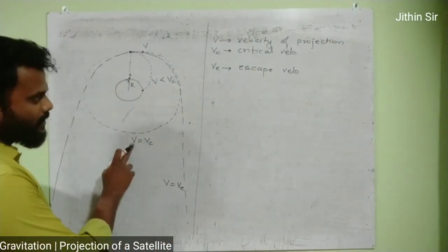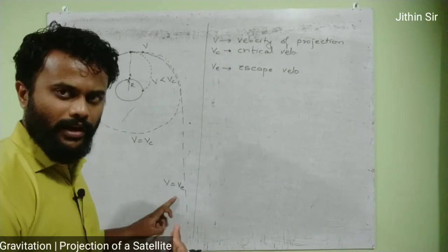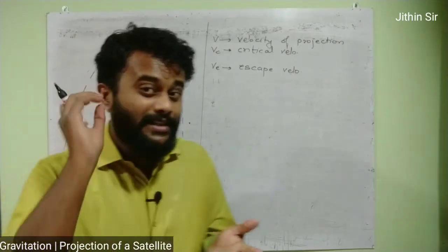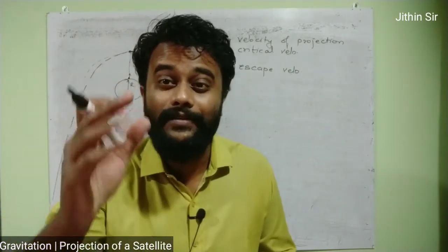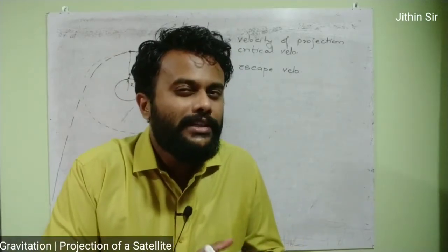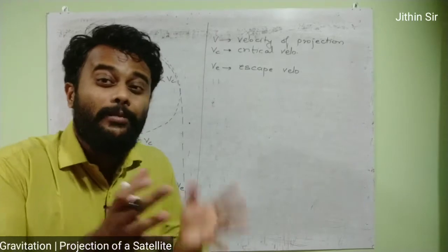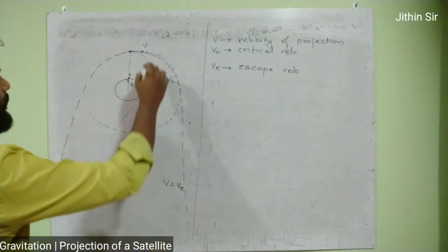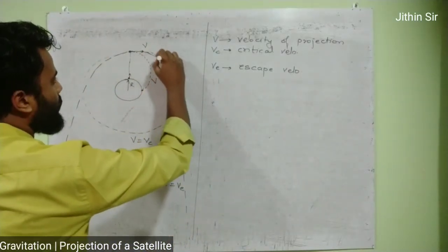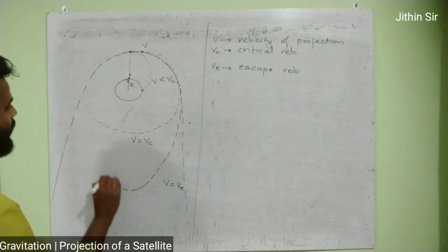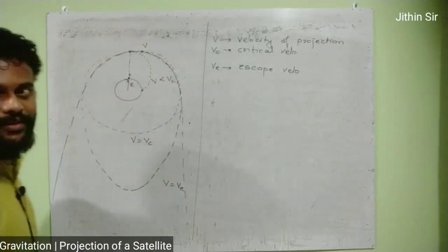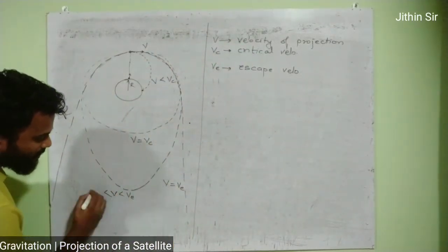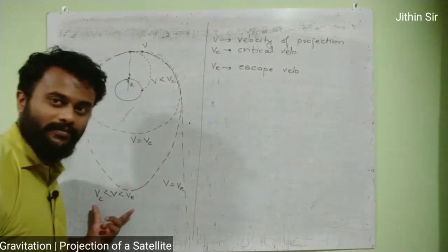If the velocity of projection is between critical velocity and escape velocity — greater than critical velocity but less than escape velocity — it won't do circular motion and it won't escape either. It will perform an elliptical orbit, staying around the earth. This elliptical orbit case happens only when the velocity of projection is between critical velocity and escape velocity.